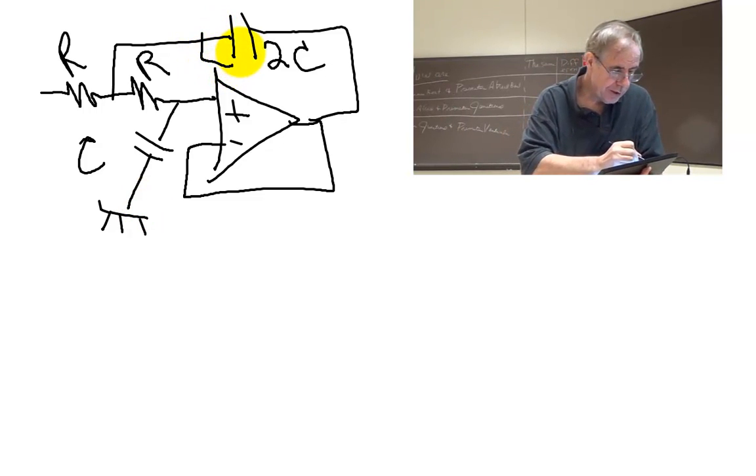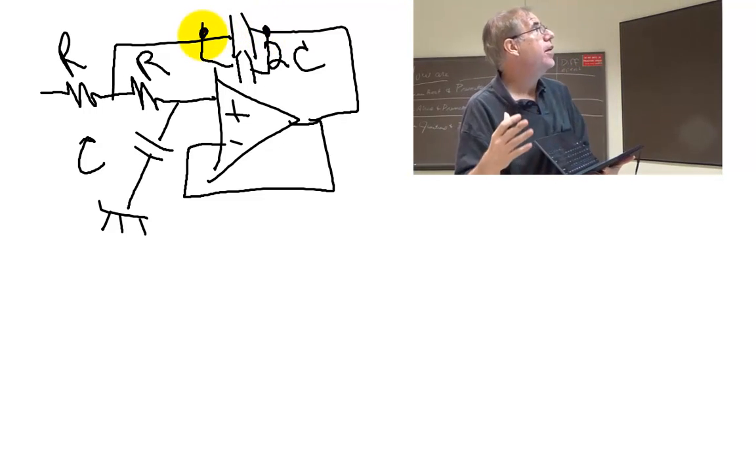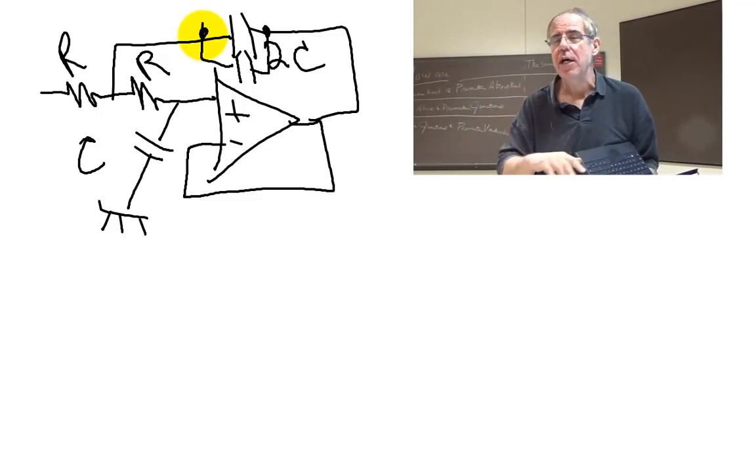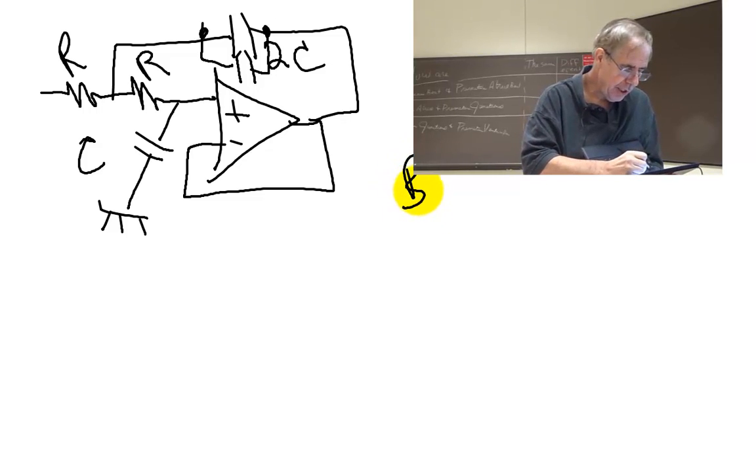So it turns out this filter when we actually build it is going to look like that, where we now have three capacitors of the same type and two resistors of the same type. That's why this Butterworth filter is going to be so easy to actually build.